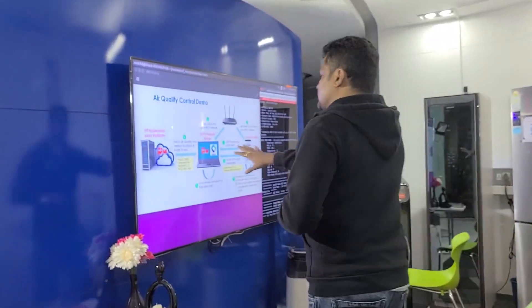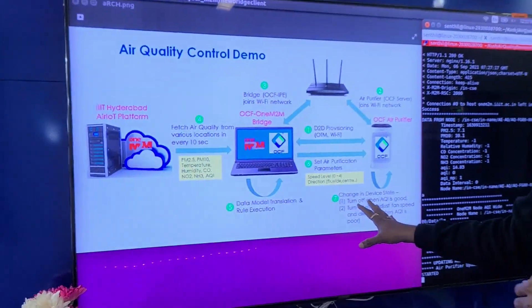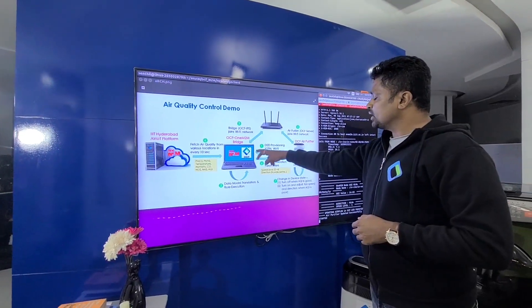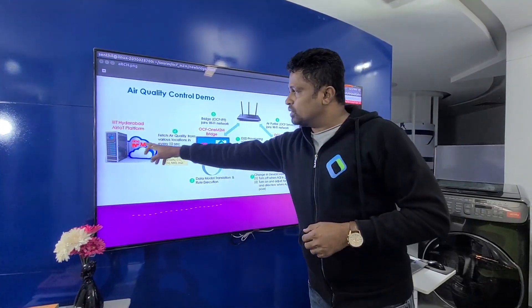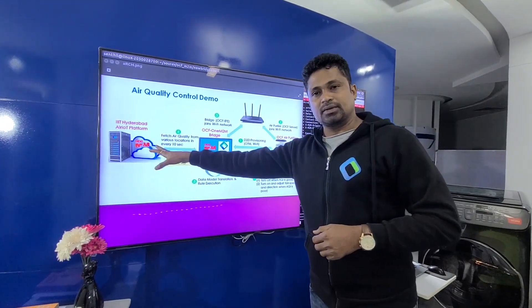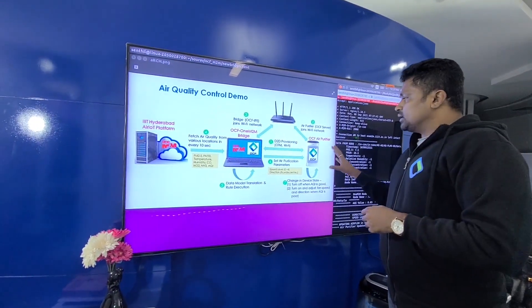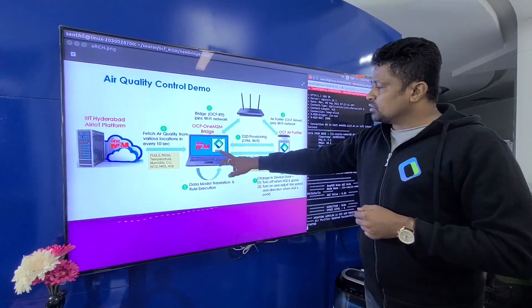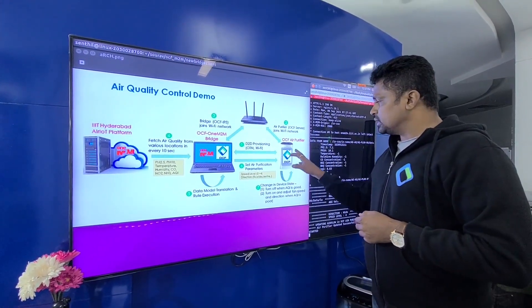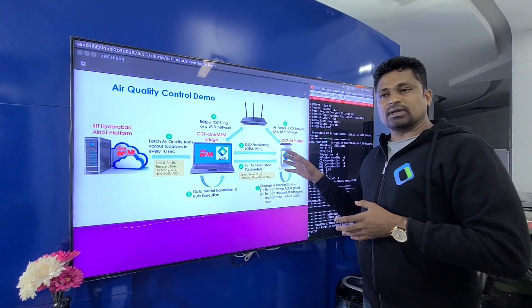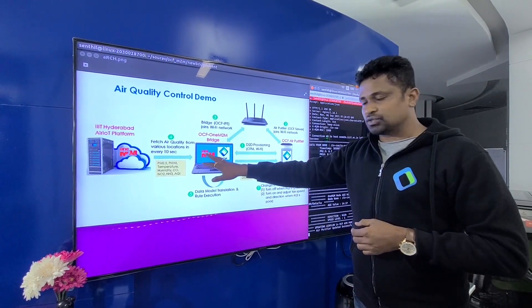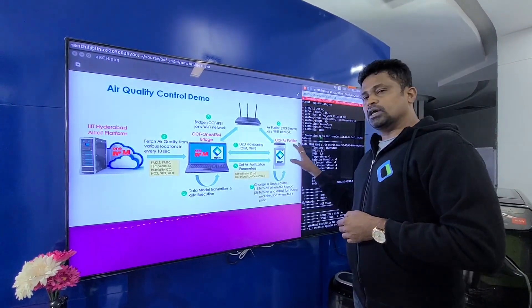Coming to the demonstration, this is an end-to-end architecture of the whole demonstration. The air purifier and the bridge are connected in a proximal IoT network, and on the other side, the bridge is connected to the air IoT platform through the internet. The air purifier does not have a user interface to provision to the network, so we use OCF's mediator application to provision the air purifier for Wi-Fi as well as security provisioning. The mediator application shares the same access credentials to the bridge, using which the bridge can securely communicate with the air purifier.